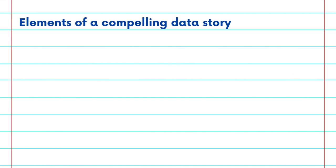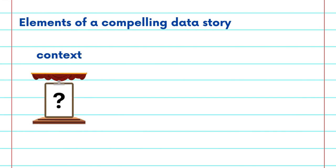Let's dive into the three key elements of a compelling data story. First, context. This sets the stage for your data, providing background and explaining why this data matters.